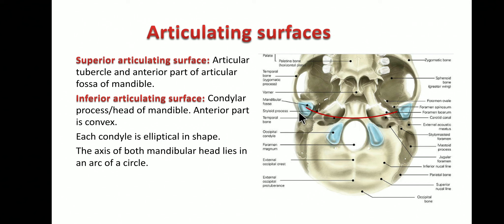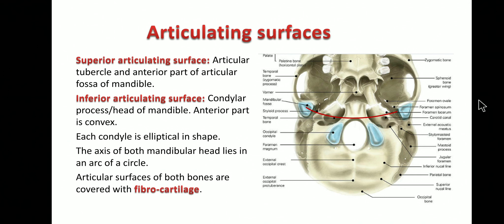A peculiarity of this joint is that both the superior and inferior articular surfaces are covered by fibrocartilage — the cartilage of wear and tear — rather than hyaline cartilage. Hyaline cartilage normally provides smooth movement but tends to calcify with age. Because the temporomandibular joint is moved very extensively, it is covered with fibrocartilage, possibly to prevent such calcification.